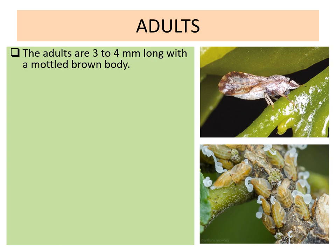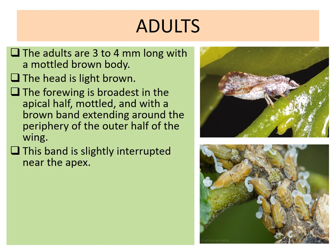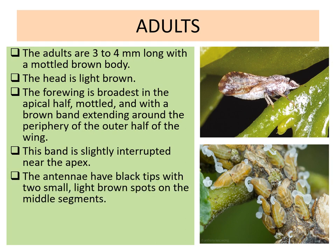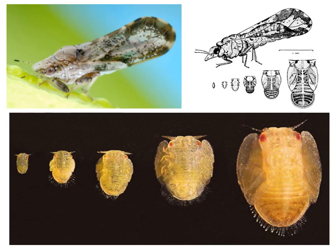The adults are 3 to 5 mm long with a mottled brown body and a light brown head. The forewing is broadest in the apical half, mottled, with a brown band extending around the periphery of the outer half of the wing, slightly interrupted near the apex. The antennae have black tips with two small light brown spots on the middle segment. A living Diapherina citri is covered with whitish waxy secretion making it appear dusty. Here you can see various instars of Diapherina citri, the adult, and the different instars with wing pads.